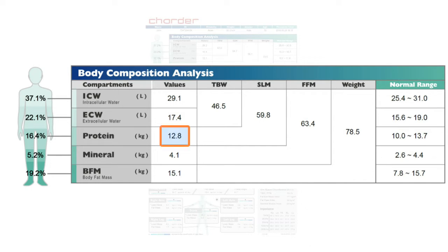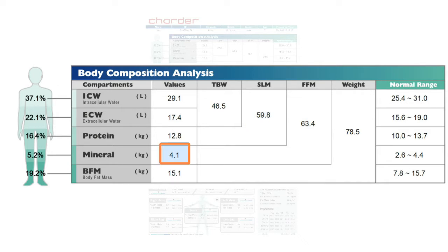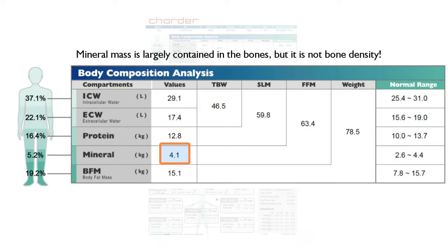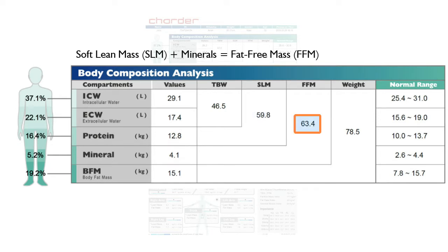The next compartment is protein. When you add your body water and protein, you get soft lean mass, which is sometimes called lean body mass — basically the amount of muscle in your body. Next, we have minerals. Note that this is the weight of minerals in your body, most of which is contained in your bones. This is not the same as bone density; to get a bone density measurement, you need something like a DEXA scan. By adding minerals to soft lean mass, you get fat-free mass.